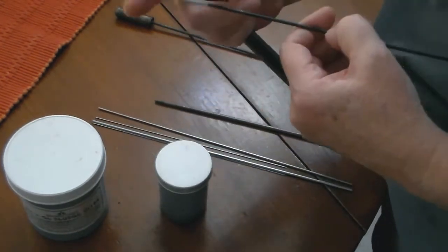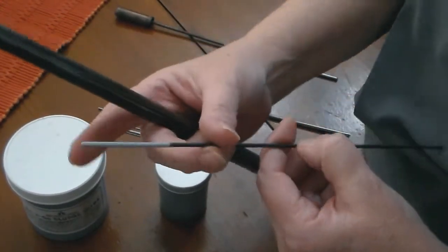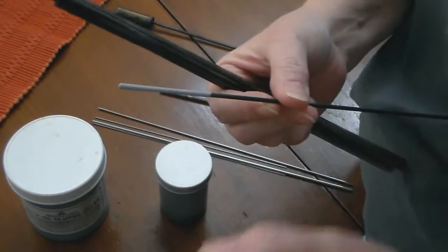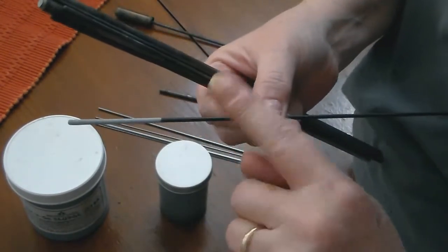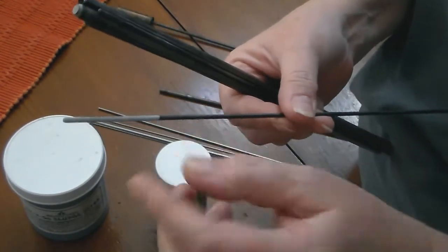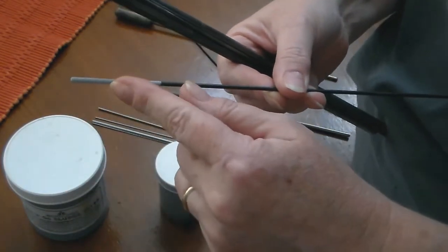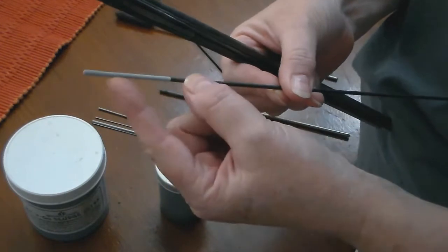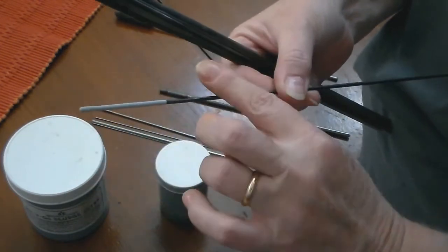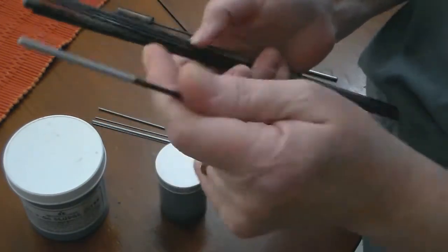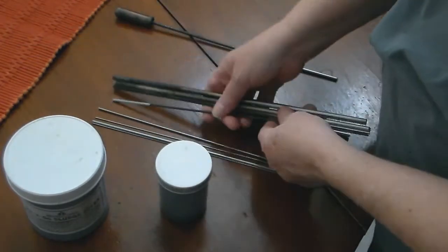This one is already dipped in bead release, as you can see. If you actually were going to put glass straight onto the stainless steel mandrel, it will fuse to it. So you need a barrier, which is the bead release between the steel and the glass. So that's where the bead release comes in.